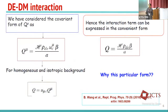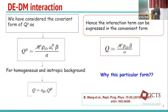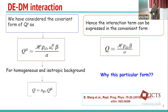So the usual choices are Q proportional to H·rho_c, H·rho_dark_energy, or a combination. For our model we have chosen the interaction term proportional to H times rho_dark_energy, multiplied by the bulk velocity of the dark matter sector, and beta is the coupling strength — it determines how strong the interaction is. The sign of beta is also important: if beta is positive, energy flows from dark matter to dark energy; if beta is negative, the opposite occurs.